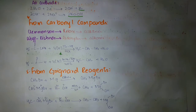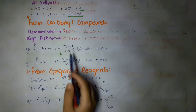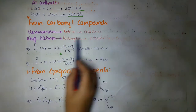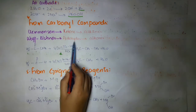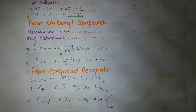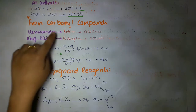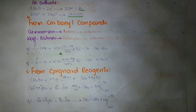Coming to our fourth method, which is from carbonyl compounds. We can use ketones and aldehydes and reduce them to make alkanes. There are two types of reductions: Clemmensen reduction and Wolff-Kishner reduction. In Clemmensen reduction, we reduce a ketone to an alkane, while in Wolff-Kishner reduction, we reduce an aldehyde to an alkane. Remember: Clemmensen uses ketone and Wolff-Kishner uses aldehyde.